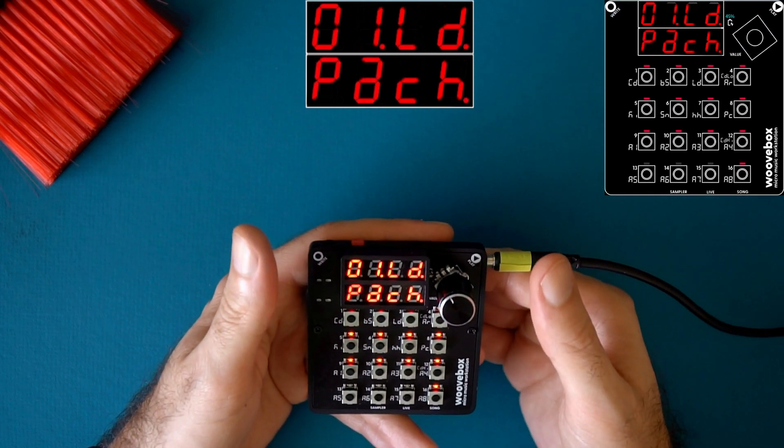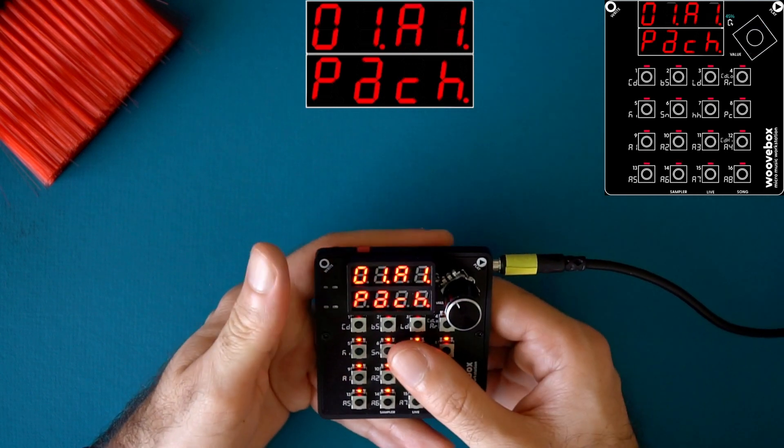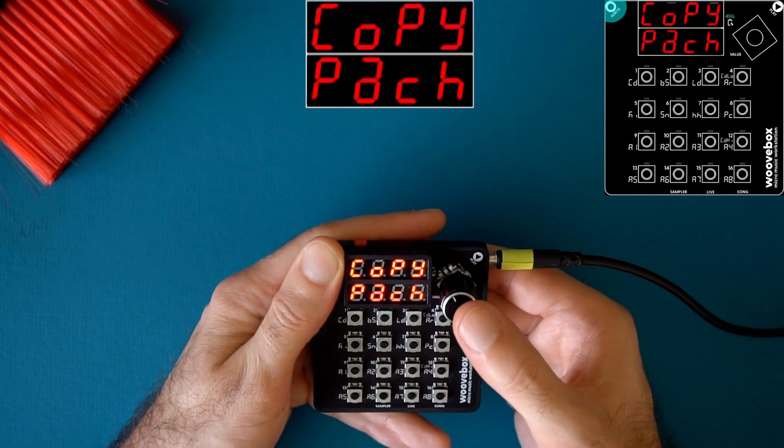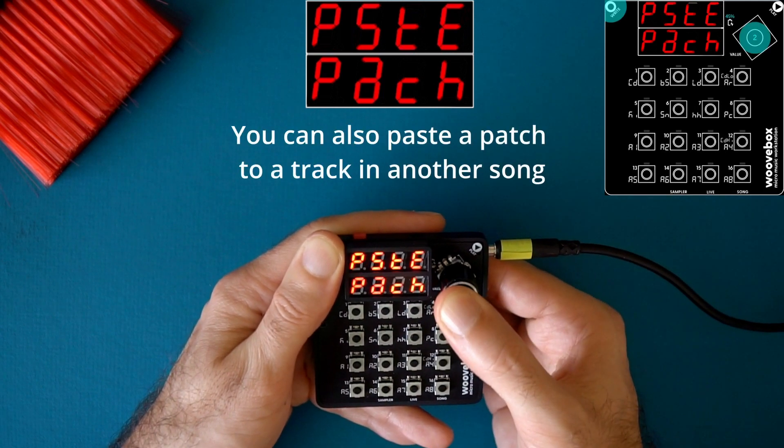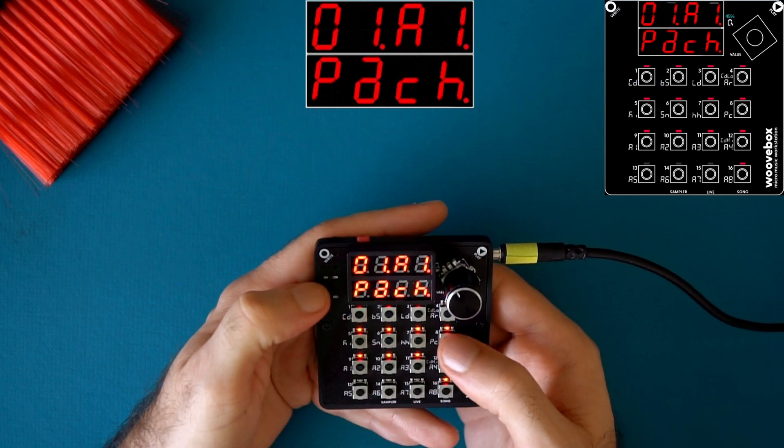Now I can switch to a different track. Let's go to A1. Here we go. And in the patch screen, hold right, click the encoder again to enter the context menu until it says paste patch, press and hold. And now I have my patch again.